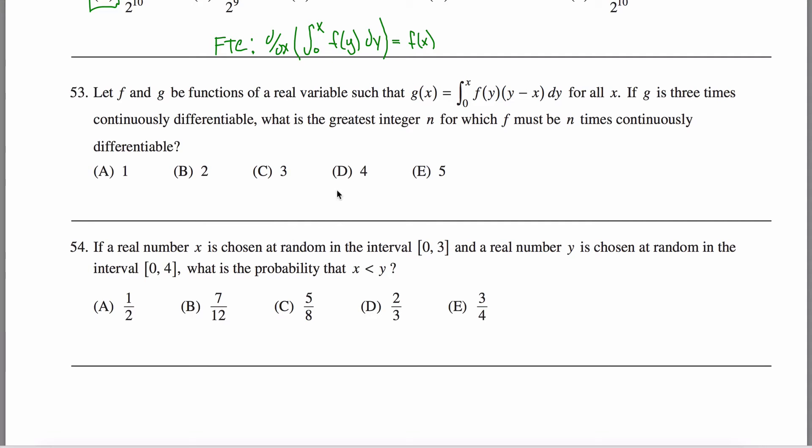All right, here's Problem 53 off the Math Subject GRE Practice Test. This problem's a disaster. I think 13 or 14% of people, some low number like that, got it right on the test. So what you should do is throw a dart and choose one of these answers and take your 1 in 5 chance and move on to 54, which is a hell of a lot easier.